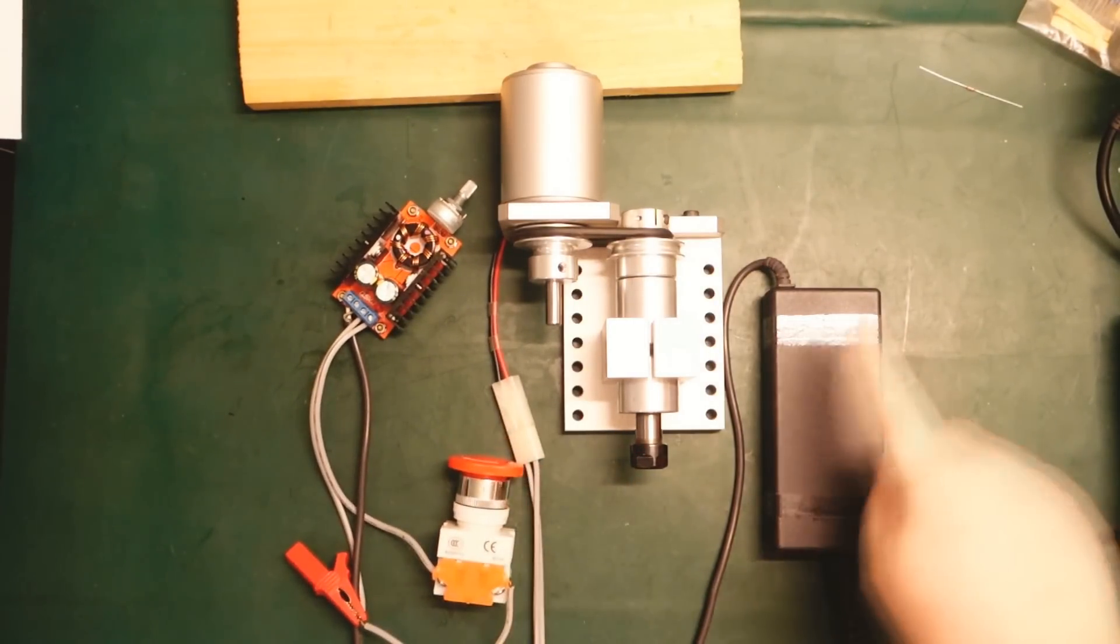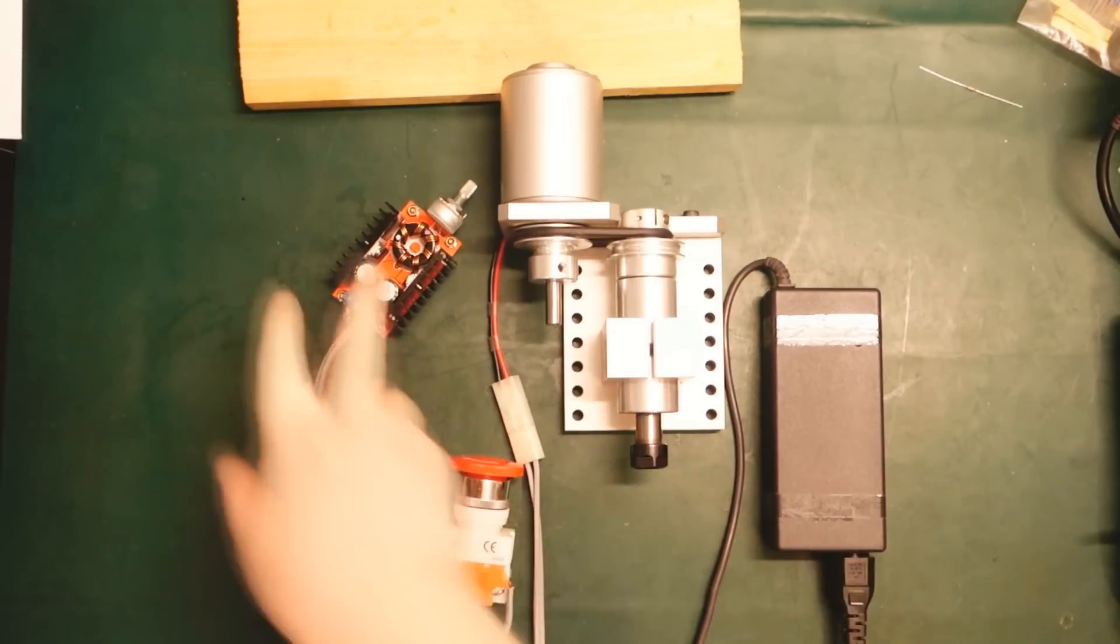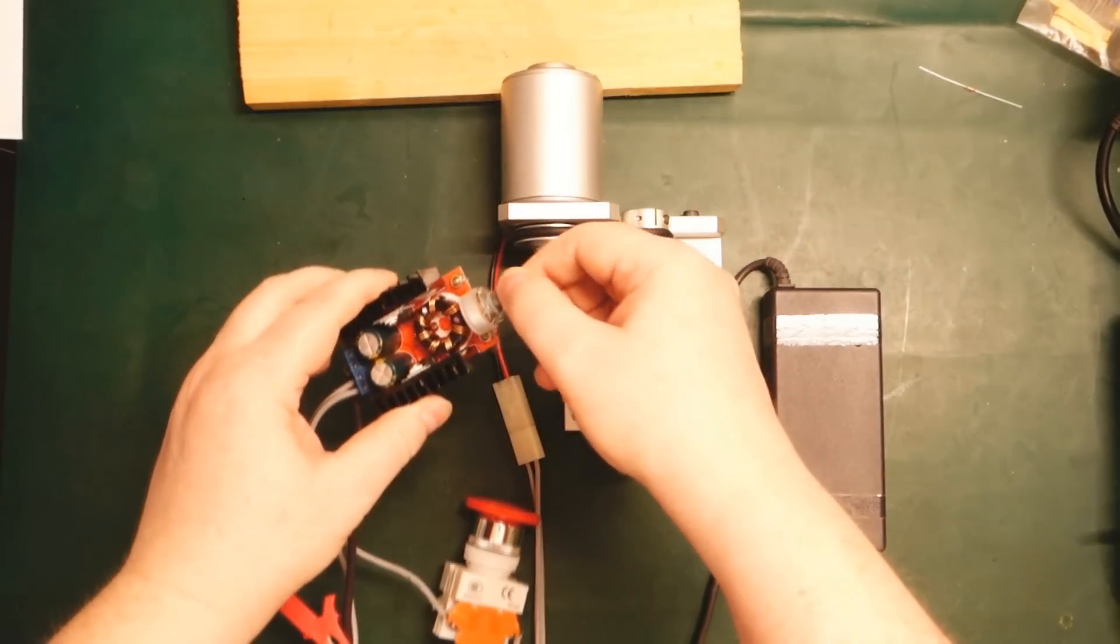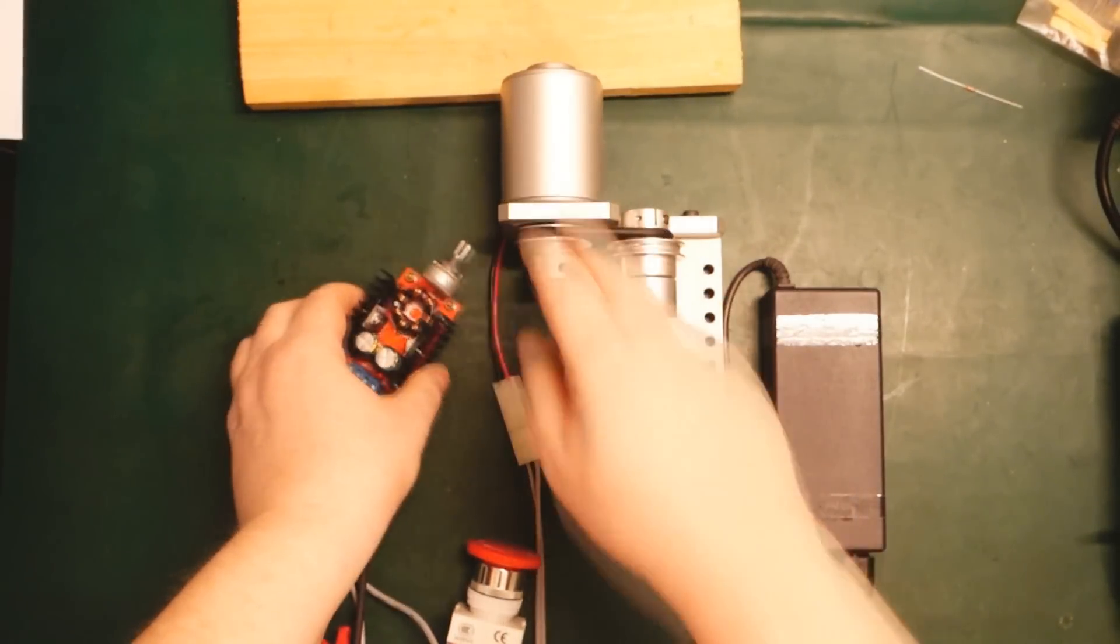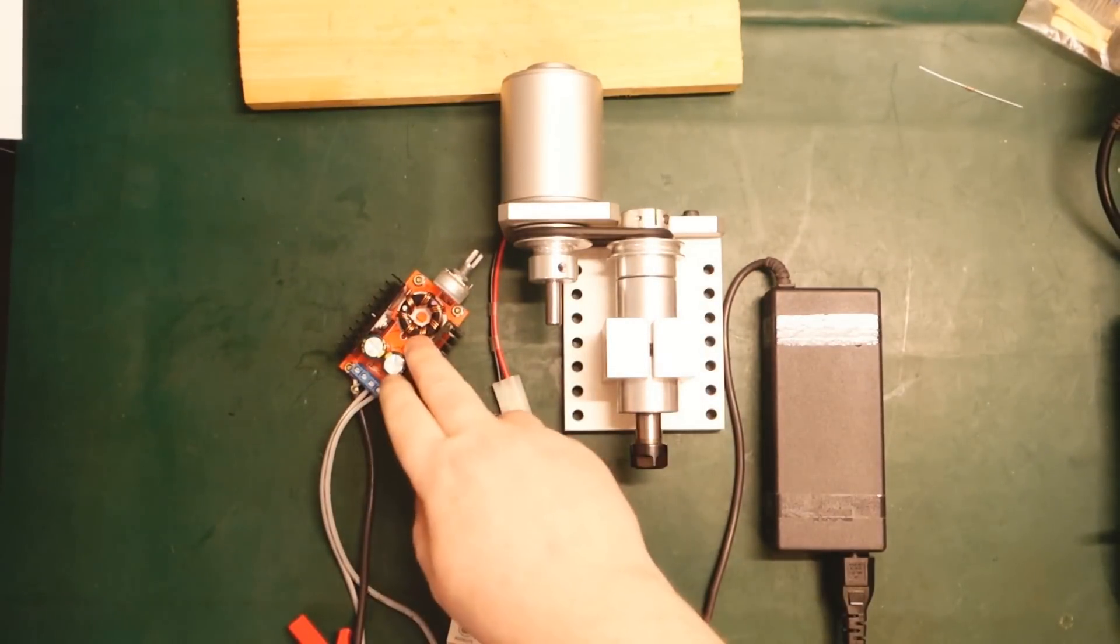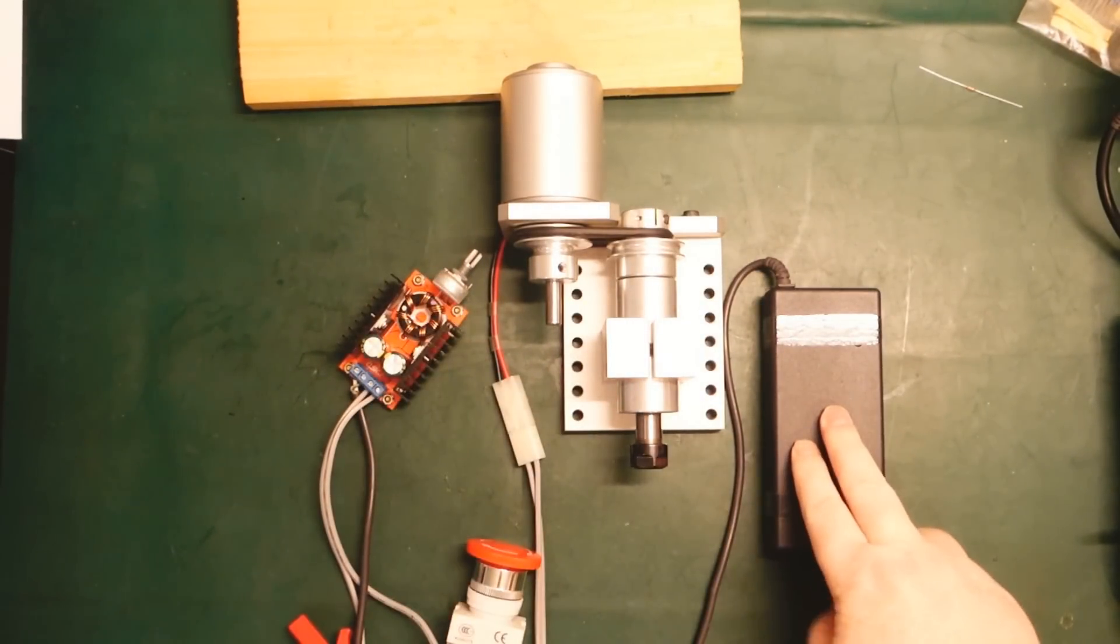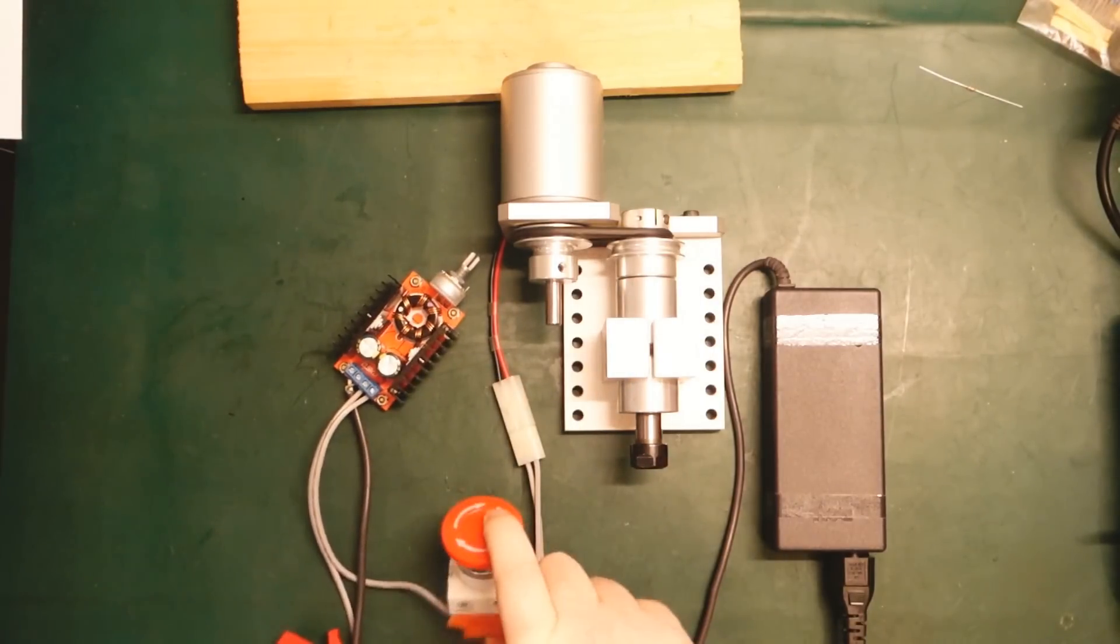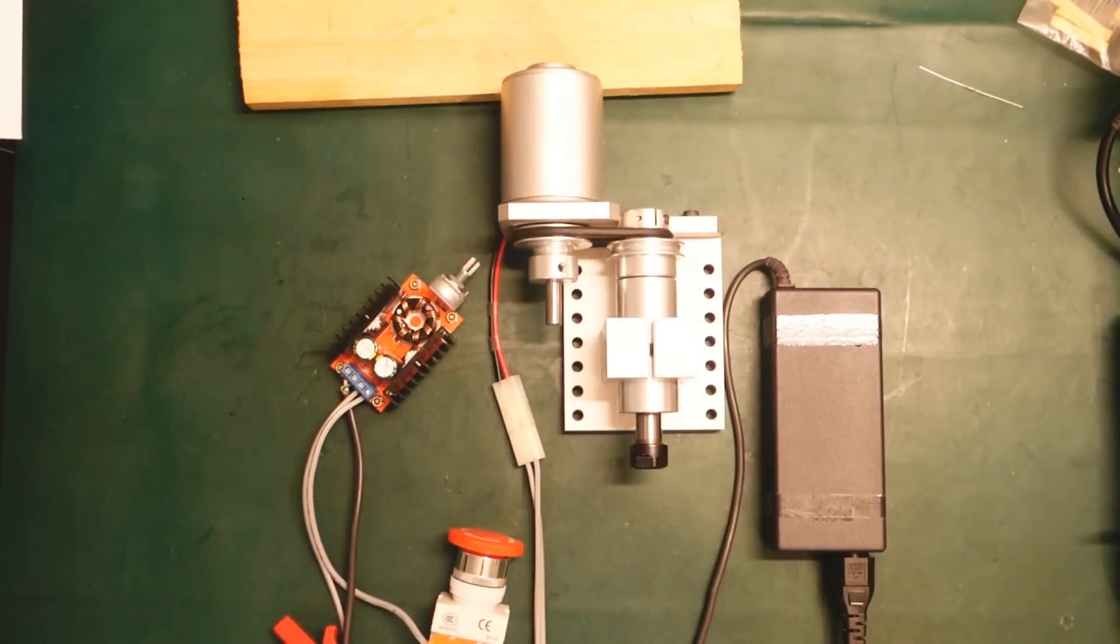It should be able to handle plenty of wattage and we have a switch here. This goes from the power supply to the step up converter to give some basic speed regulation of the spindle. Because this is only 20 volts, this will be able to supply up to 30 something volts, and then goes to the spindle.